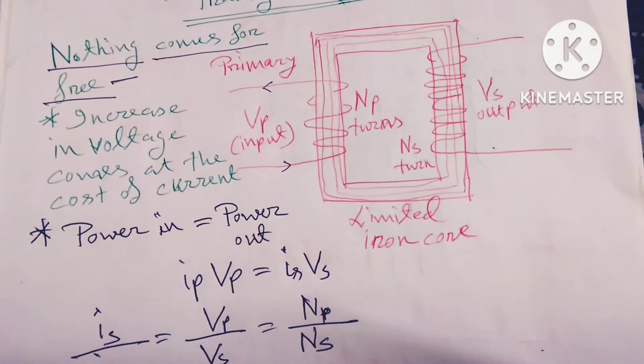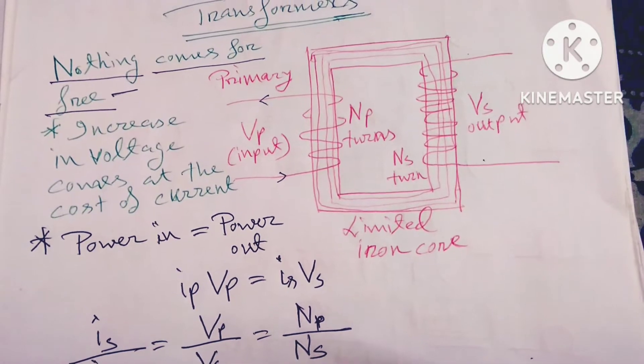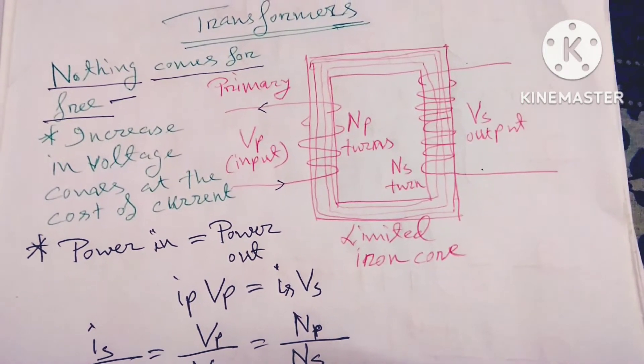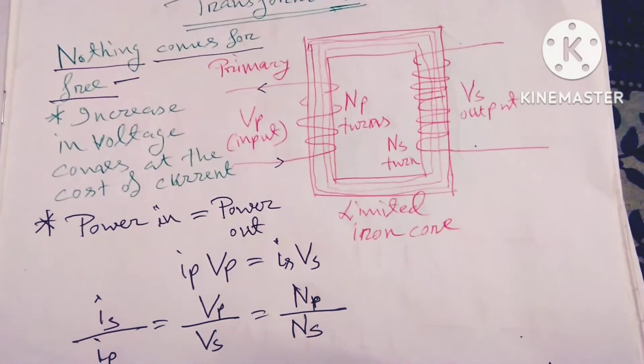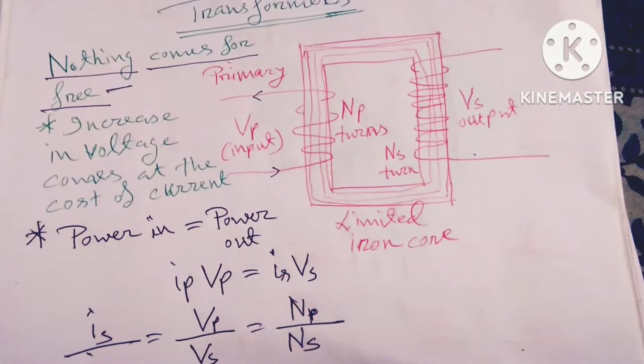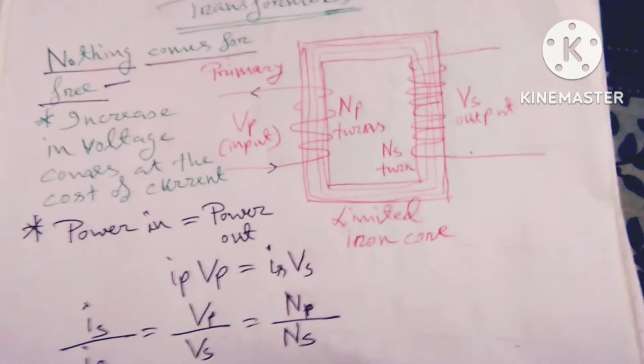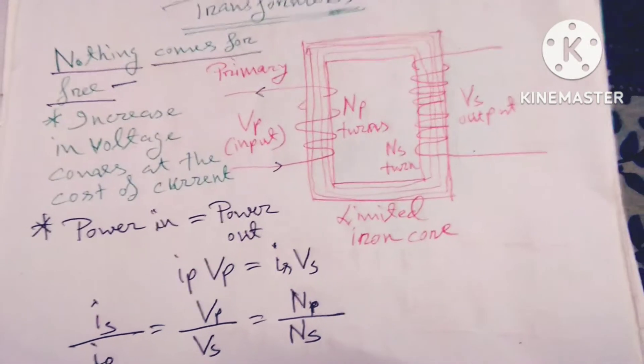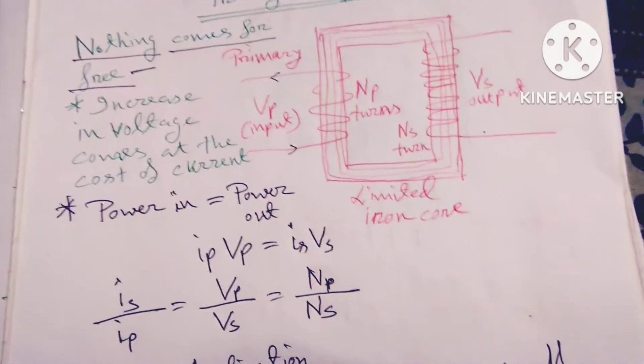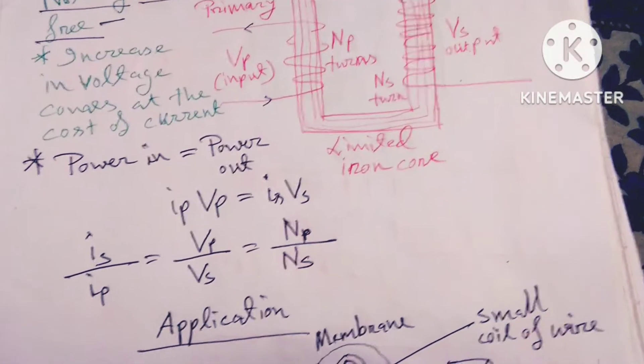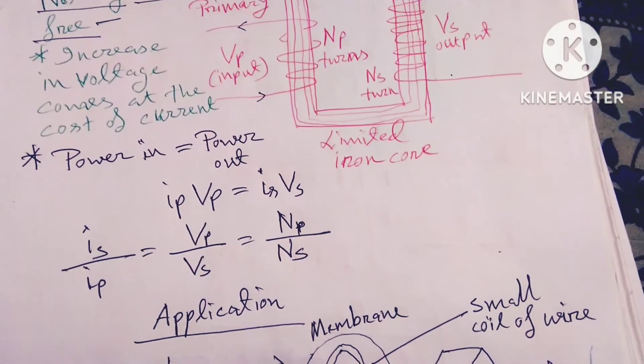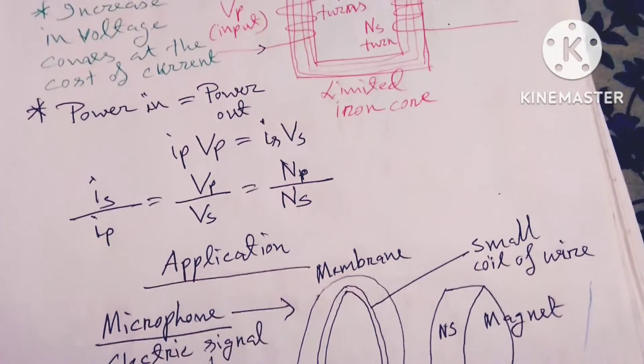Power in equals power out. Nothing comes for free. So Ip times Vp equals Is times Vs. Power, power. So Is by Ip equals Vp divided by Vs, which equals Np divided by Ns.